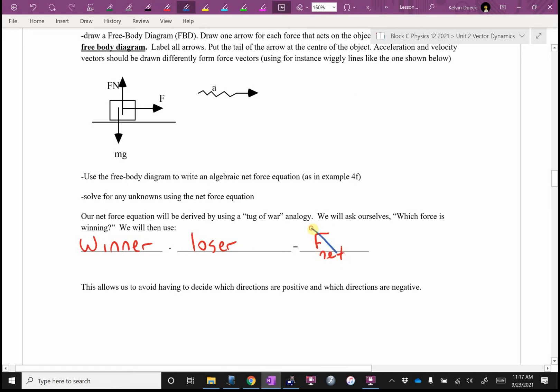Winner minus loser equals F net. Although, if you want to, you can cross out F net and you can say the net force is just MA. We went to winner minus loser equals MA. And it's because F doesn't equal MA. Technically, I should say F net equals MA.